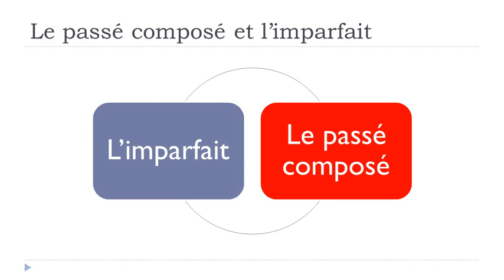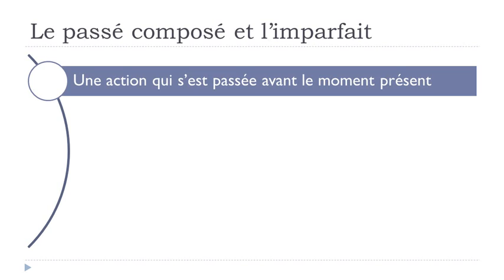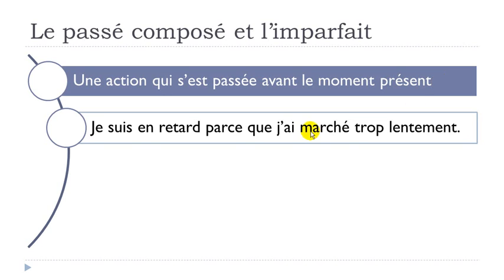Now, le passé composé. The first use is une action qui s'est passée avant le moment présent — an action that took place before the present moment. Example: 'Je suis en retard parce que j'ai marché trop lentement.' Je suis en retard — I am late — is the present. Parce que — because — j'ai marché, marcher is to walk, trop lentement means too slowly. So here j'ai marché is at the passé composé.